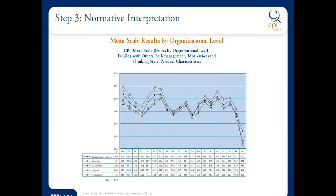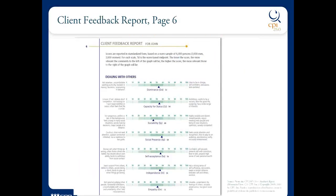The CPI is descriptive as well as comparative. I take this data and then go to John's report. On page six from John's client feedback report, you can see his actual scores for dominance, capacity for status, and so on — seven interpersonal scales, the dealing with others scales. The score of 50 represents the average score of 6,000 people in the general population. John's scores generally exceed that, with the exception of one scale. One of them is pretty close: empathy at 51, sociability at 44. So he will show less sociability than people in general.